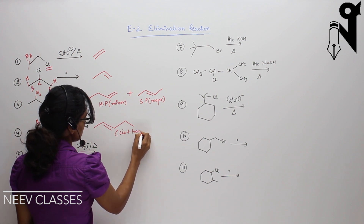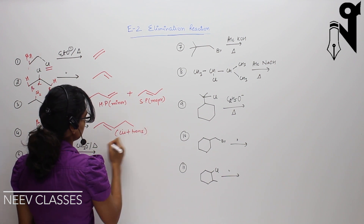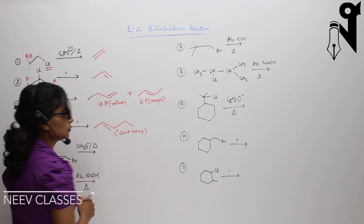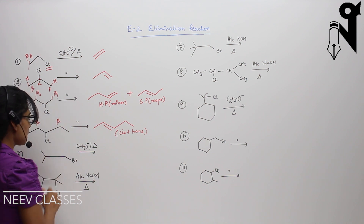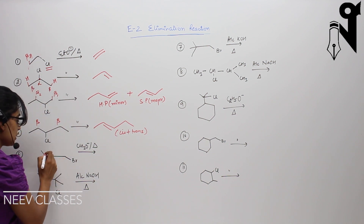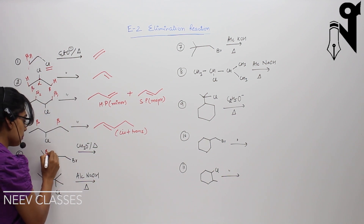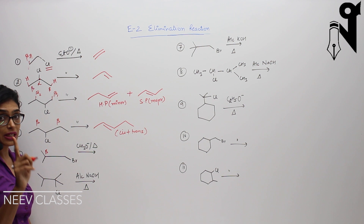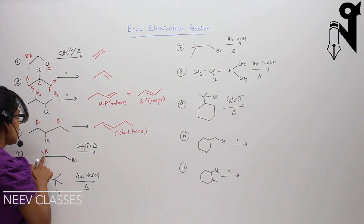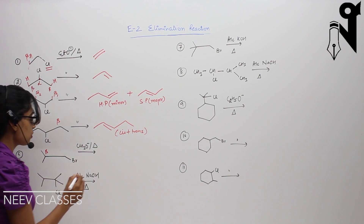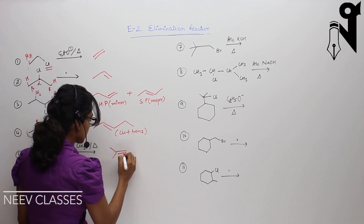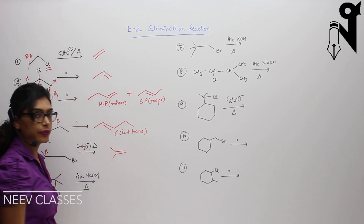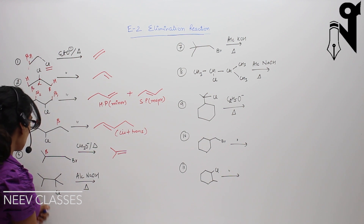For the fifth question, this is my bromine and this is my beta carbon. There is only one beta position, so hydrogen will be removed from here and we will get only one product.